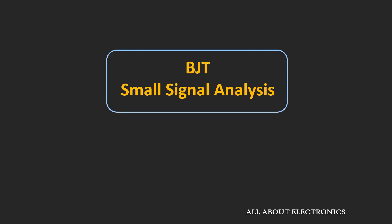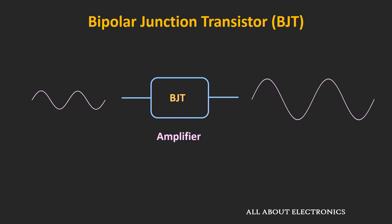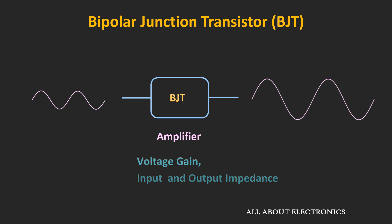Hey friends, welcome to the YouTube channel all about electronics. In this video, we will understand how to do the small signal analysis of the BJT. This small signal analysis is particularly useful when the BJT is used as an amplifier. Using this small signal analysis, we can find or estimate different amplifier parameters like the voltage gain, input, and output impedance.